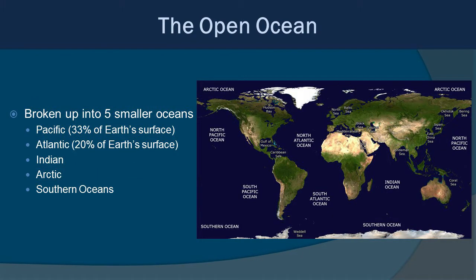We can break the World Ocean up into five smaller oceans: the Pacific, the Atlantic, the Indian, Arctic, and Southern oceans. The Pacific is actually 33% of Earth's surface, so it's by far the largest, followed by the Atlantic Ocean at 20% of Earth's surface.